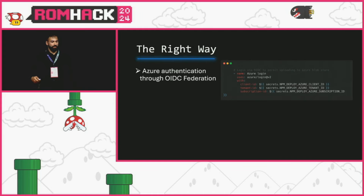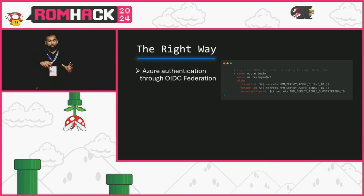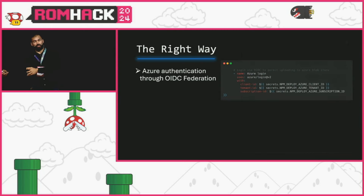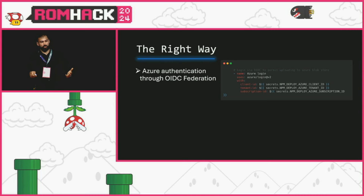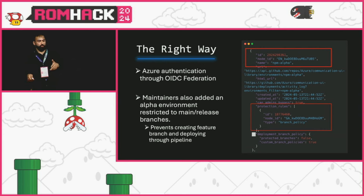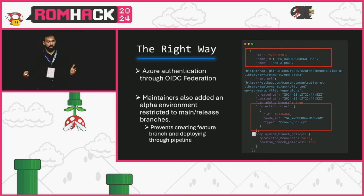The fix was that the workflow now uses OIDC federation with GitHub Actions instead of long-lived credentials — GitHub mints a signed claim that's presented to Azure, which then creates a session. This is a more secure way of authenticating than having a long-lived service principal key. They also added additional approval requirements to even the alpha pipeline, so someone couldn't just create a branch with modified code and trigger a workflow using a GitHub token.